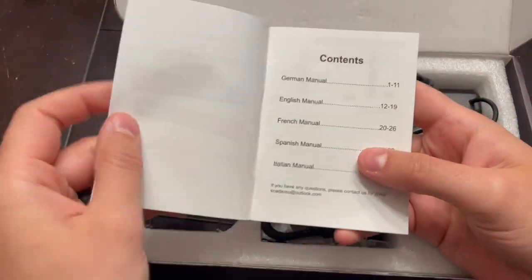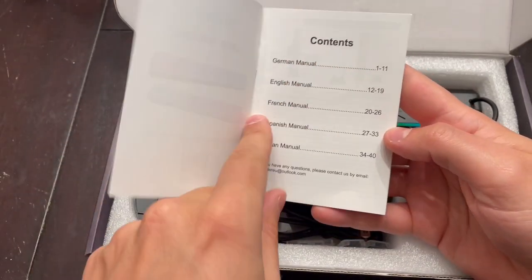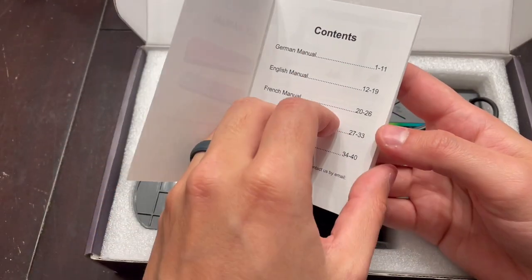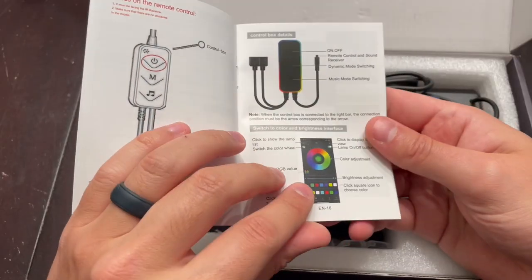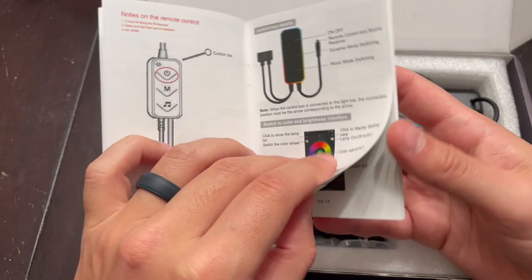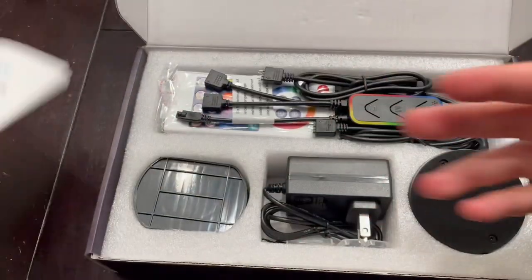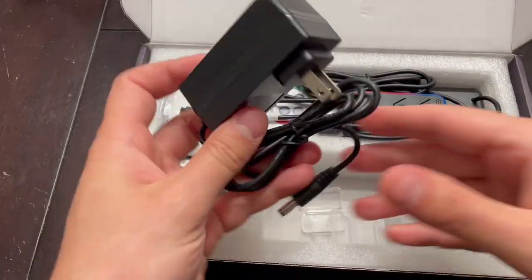So right in the box we have the manual in many different languages. The language you use is just going to be six or seven pages. It does go through the app control. It has a QR code on the front if you want to download the app which has a color wheel and some extra settings you can use and tap into, but let's pull this out and get set up.